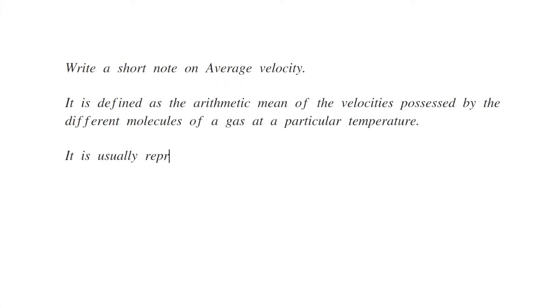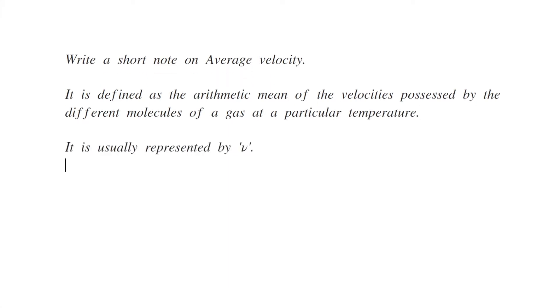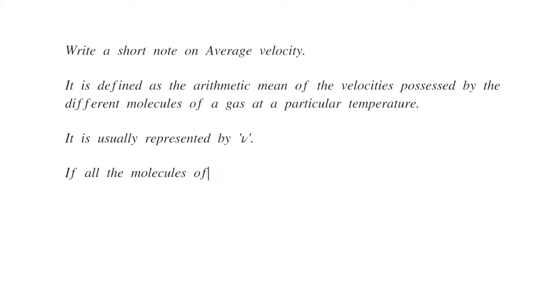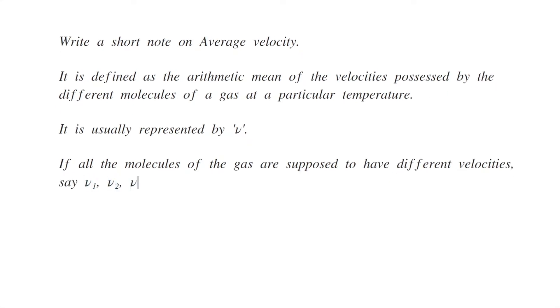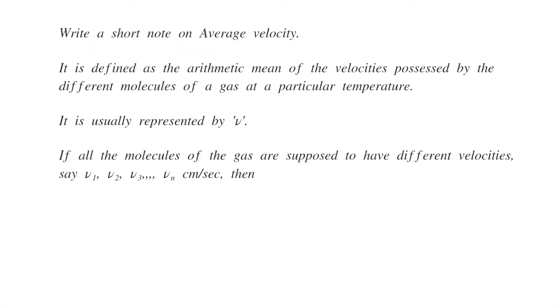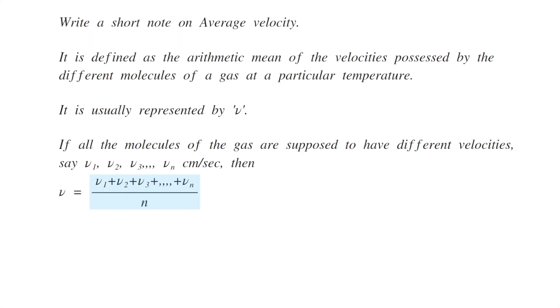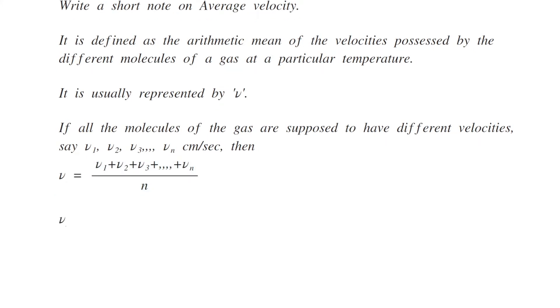If all the molecules of the gas are supposed to have different velocities, say nu1, nu2, nu3, or nu n cm per second, then the average velocity nu will be given by sum of the velocities nu1 plus nu2 plus nu3 plus till nu n divided by the total number of molecules n.